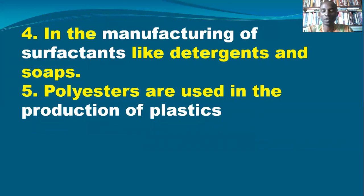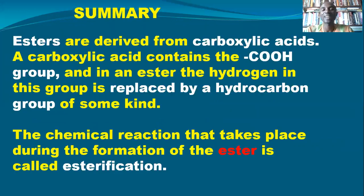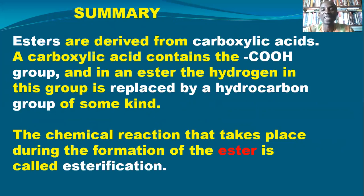This is where we end the class. Remember that Esters are derived from carboxylic acids. A carboxylic acid contains the COOH group. In an Ester, the hydrogen in the COOH is replaced by a hydrocarbon group of some kind — it could be alkyl, it could be benzene, it could be any other substance to replace the H in the carboxylic acid. The chemical reaction that takes place during the formation of the Ester is called Esterification.